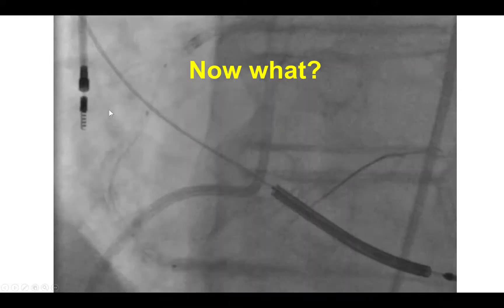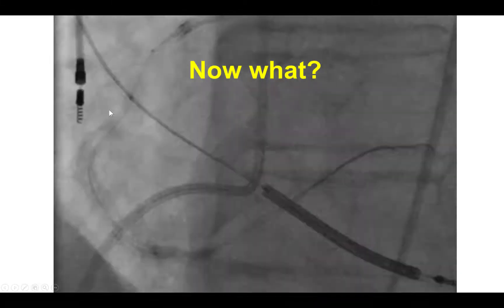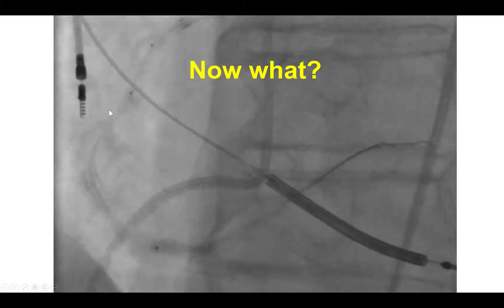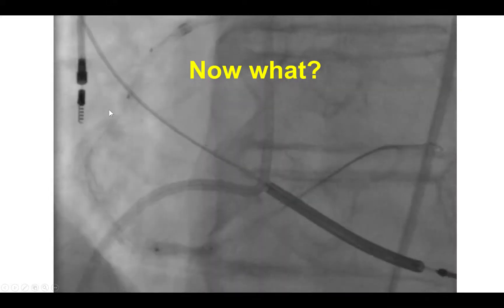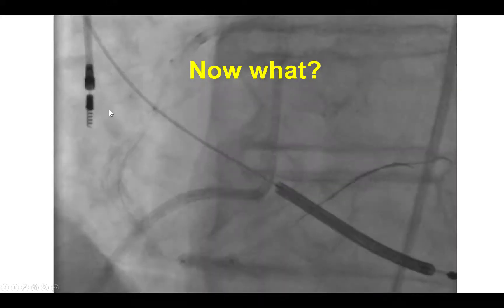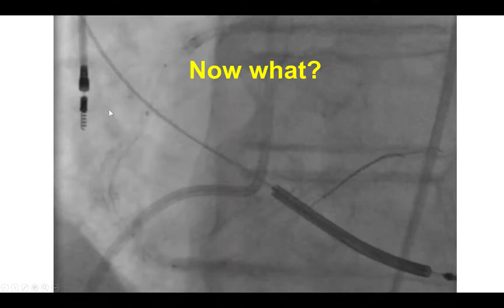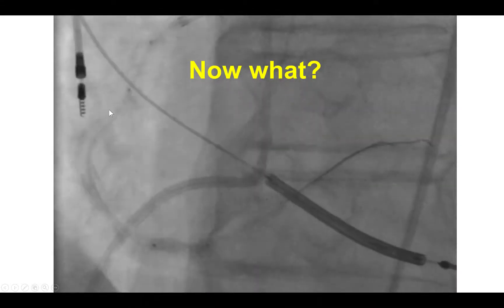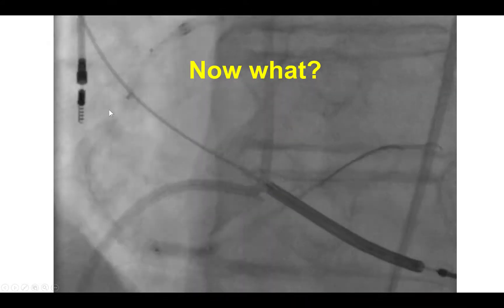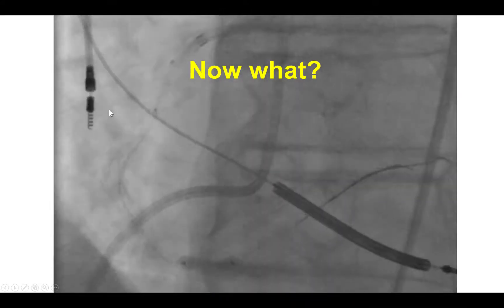We had a balloon fragment entrapped inside the proximal right coronary artery. The good news is that the patient continued to have antegrade flow in the right coronary, so we didn't have chest discomfort or ST elevation making us need to move in emergency mode. But in some cases, this can happen.